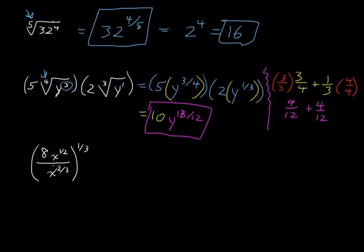Just break it down. First, simplify what's inside the parentheses. So when you divide like bases, you subtract the exponents. So that is 1 half minus 2 thirds. And after getting common denominator, then you have, that becomes 3 sixths minus 4 sixths.